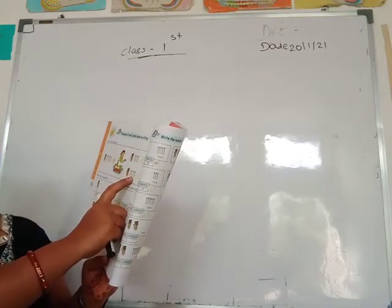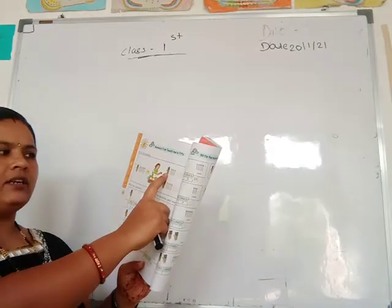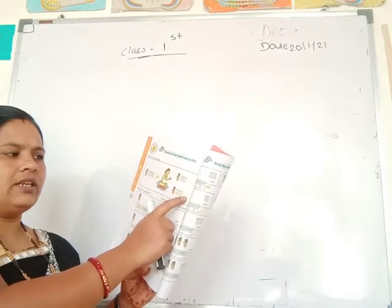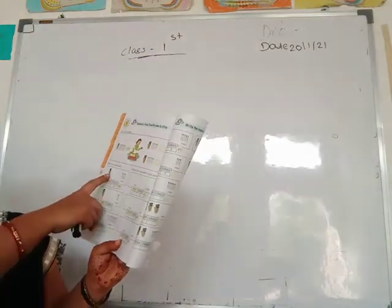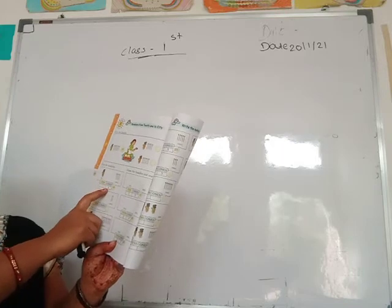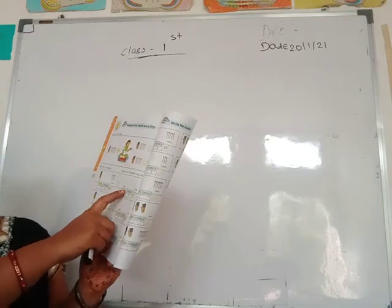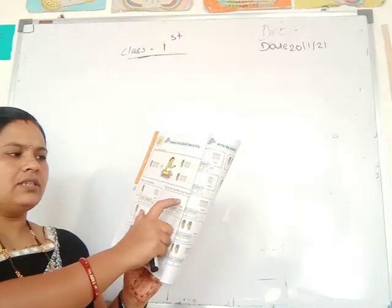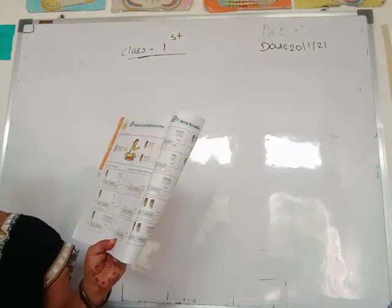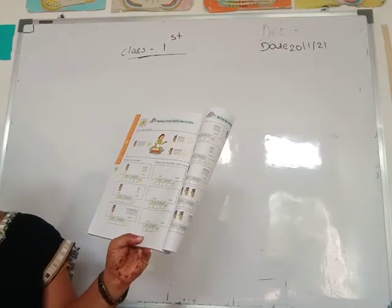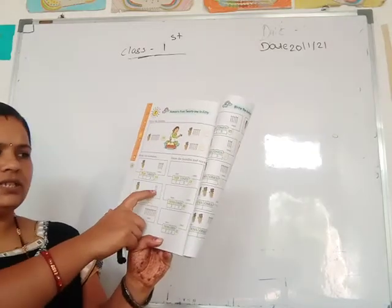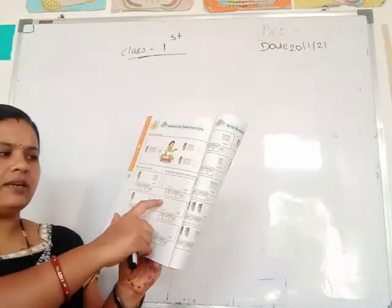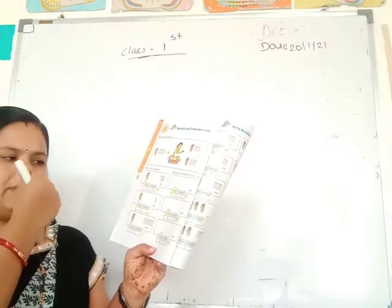Then write the number: 10s here 1 and 1s here 4, means number formed is 14. Then next one: 10s 1 and 1s — you draw 5 sticks separately — number formed is 15. Then next: 10s 1 and 1s 2 — means here 12. Then 10s and 1s here — 20. Next: 10s 1 bundle and 1s 1 through 9 — number formed is 19. Then 2 tens and 2 ones — number formed is 22.